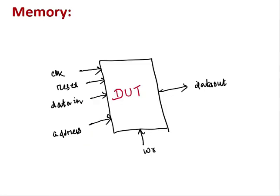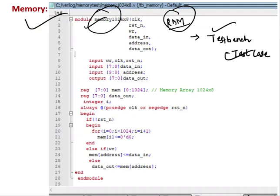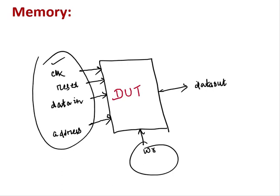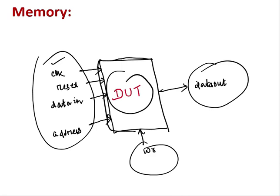This is our memory module. The inputs are clock, reset, write control signal, data input, and address. The output is data output. All these are inputs and this is the output. This module is called DUT - Design Under Test. In a test bench environment, each module is called DUT.